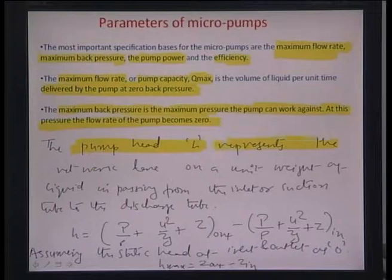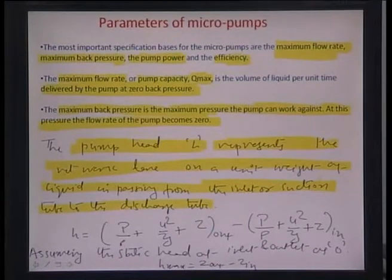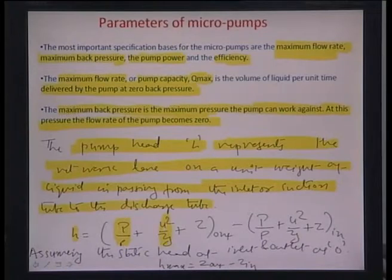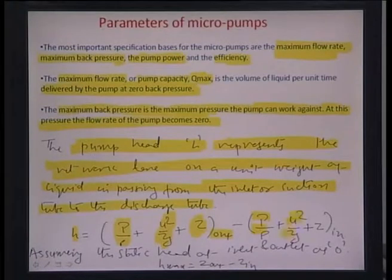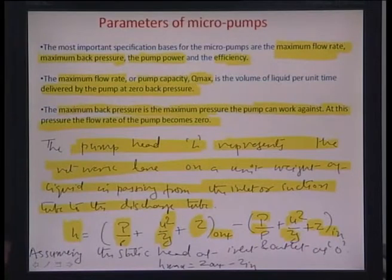Assuming static head at inlet and outlet as zero — atmospheric pressures on both sides and similar velocities — the maximum pressure head equals the potential difference due to position (z_outlet − z_inlet). If the pump is inclined such that the outlet is higher than the inlet, there will be a definite head contribution from that elevation difference.